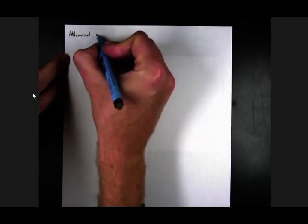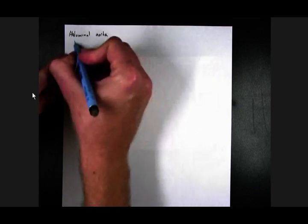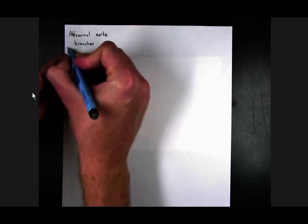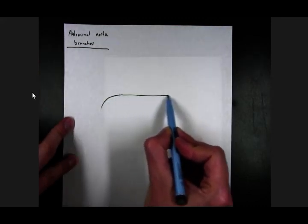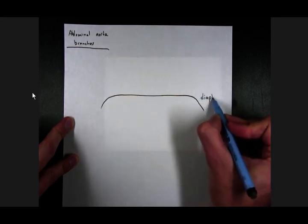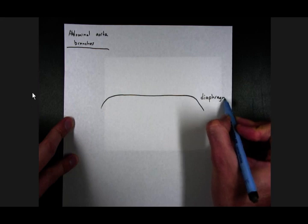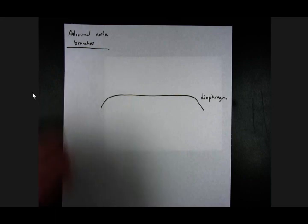Abdominal aorta. Diaphragm is a great landmark to include in this document. Let's go ahead and put our abdominal aorta down the middle of the illustration here.